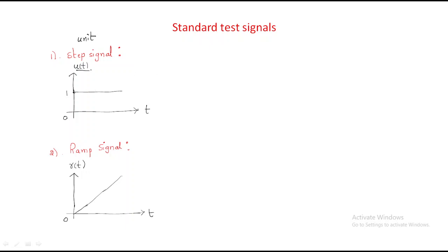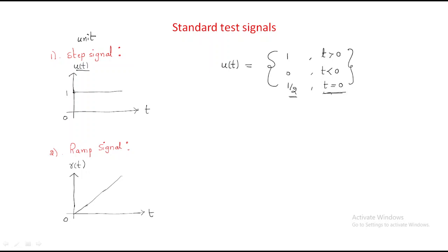The step signal is always represented as u(t). If the time period t is greater than 0, the magnitude value is 1. If t is less than 0, the magnitude value is 0. At t equals 0, the magnitude value is 1/2 — keep that in mind. The Laplace transform of the unit step signal gives 1/s.